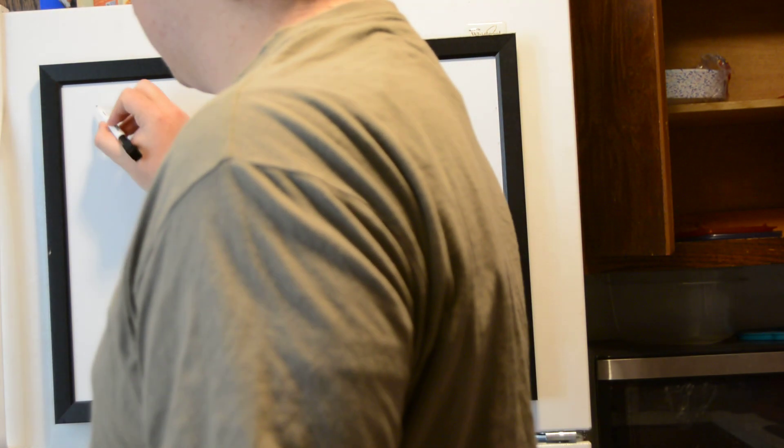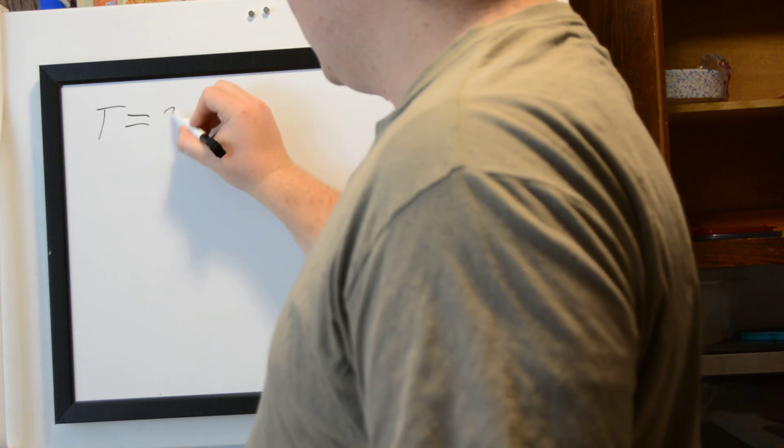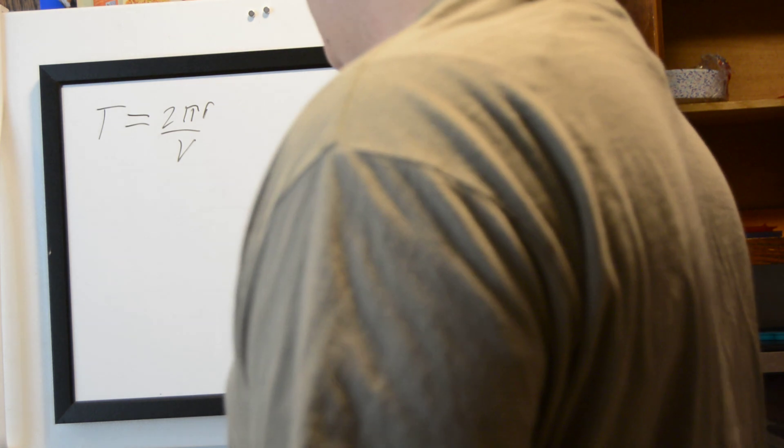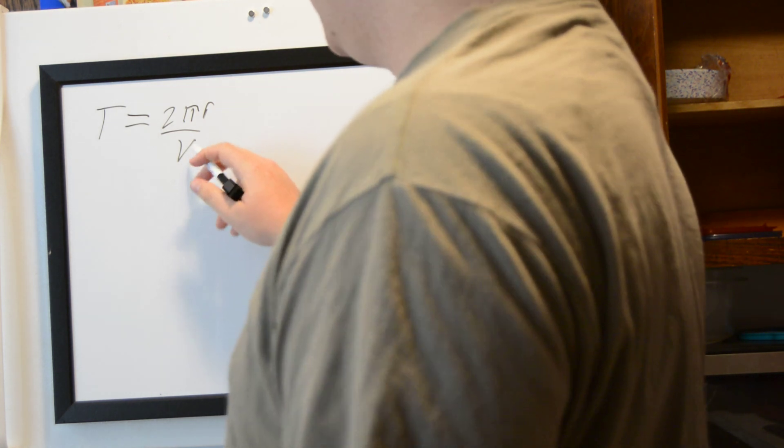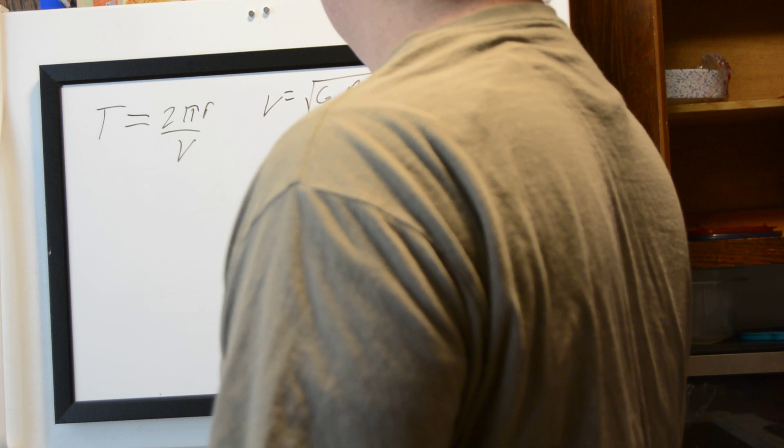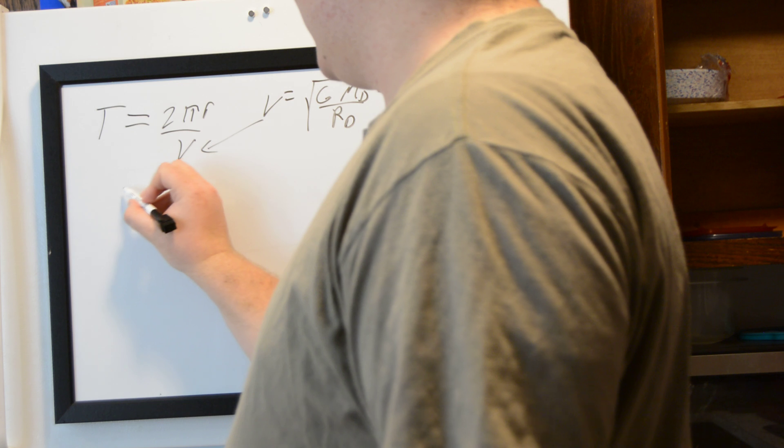The formula for the period of something in circular orbit is T = 2πr/v. And then we can go ahead and just plug v in. The equation for velocity is square root of g over rd, and just plug that in right there.